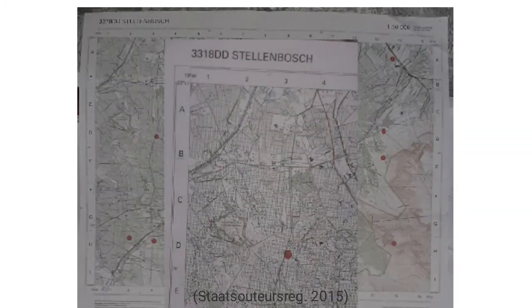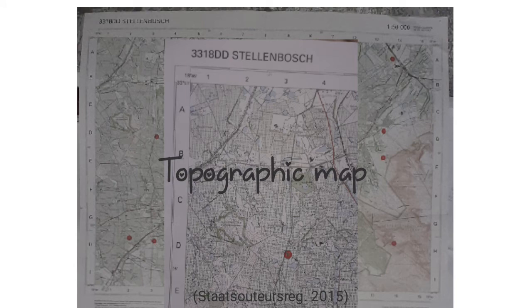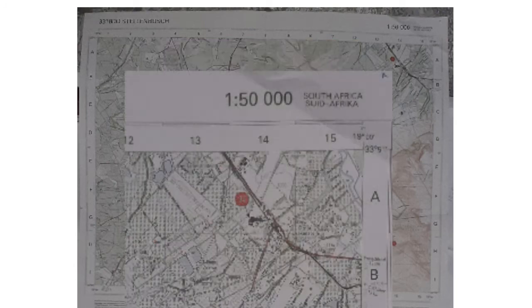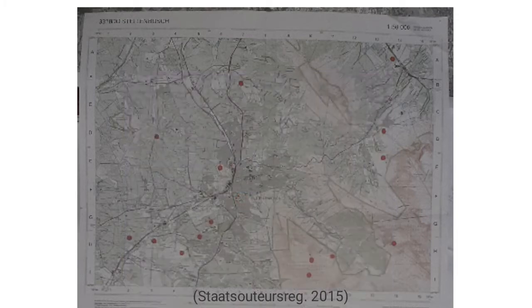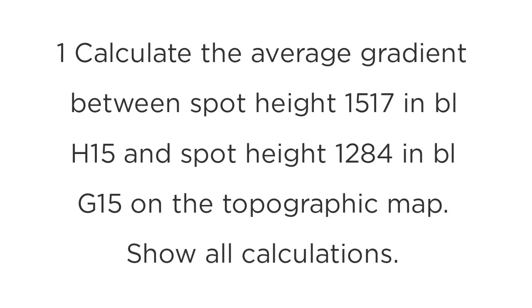Here I am holding a map of Stellenbosch — it is a topographic map and the scale is 1:50,000. The first question says: calculate the average gradient between spot height 1517 in block H15 and spot height 1284 in block G15 on the topographic map. Show all calculations.